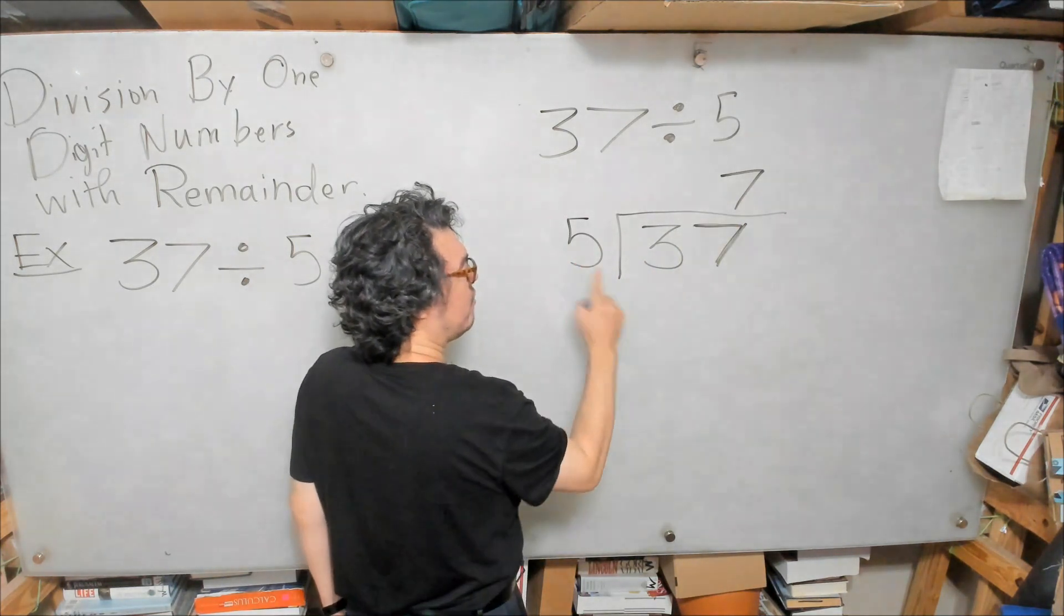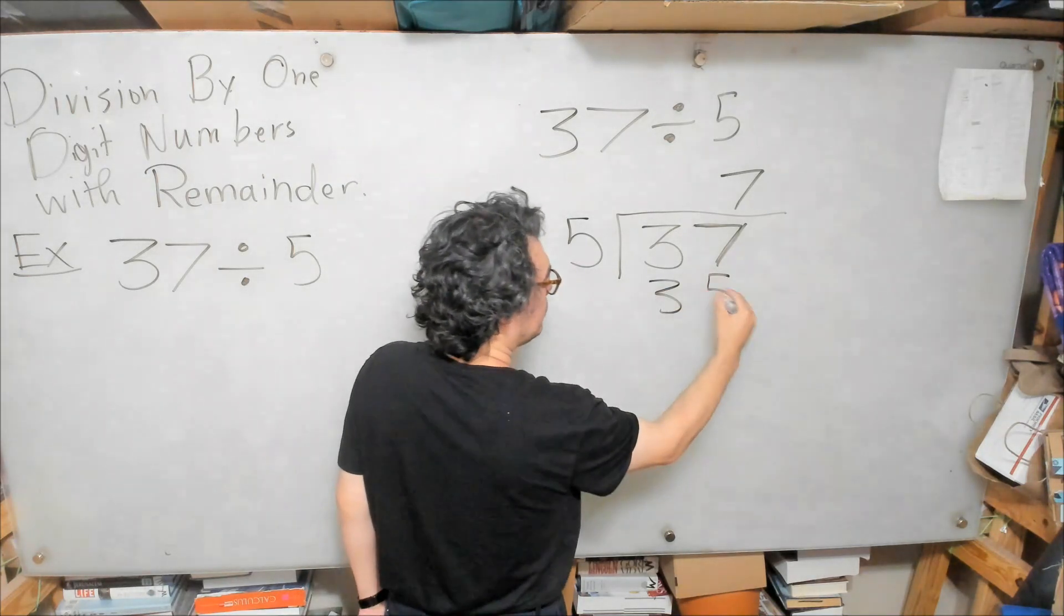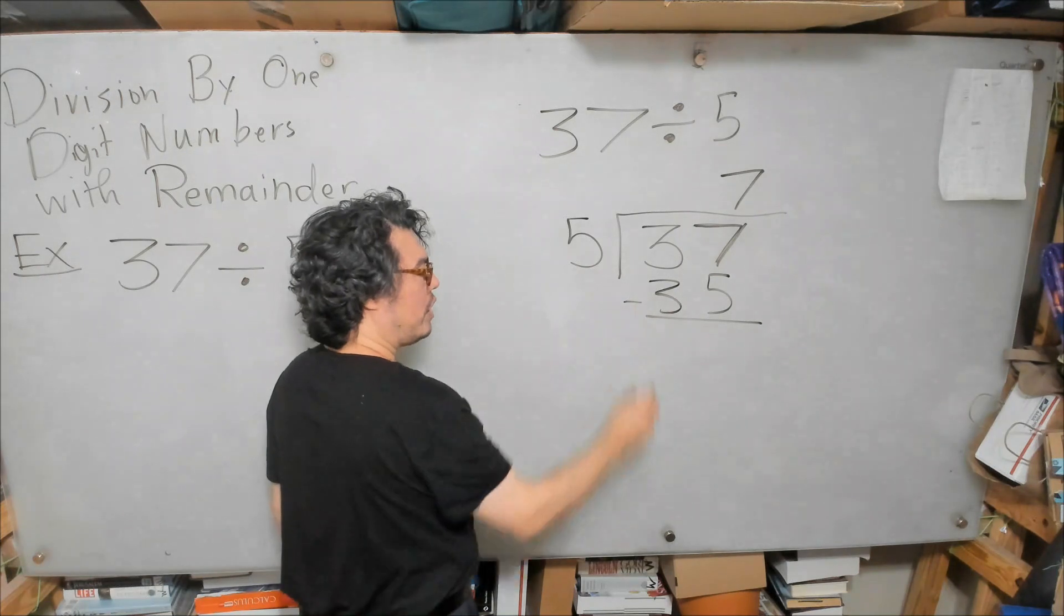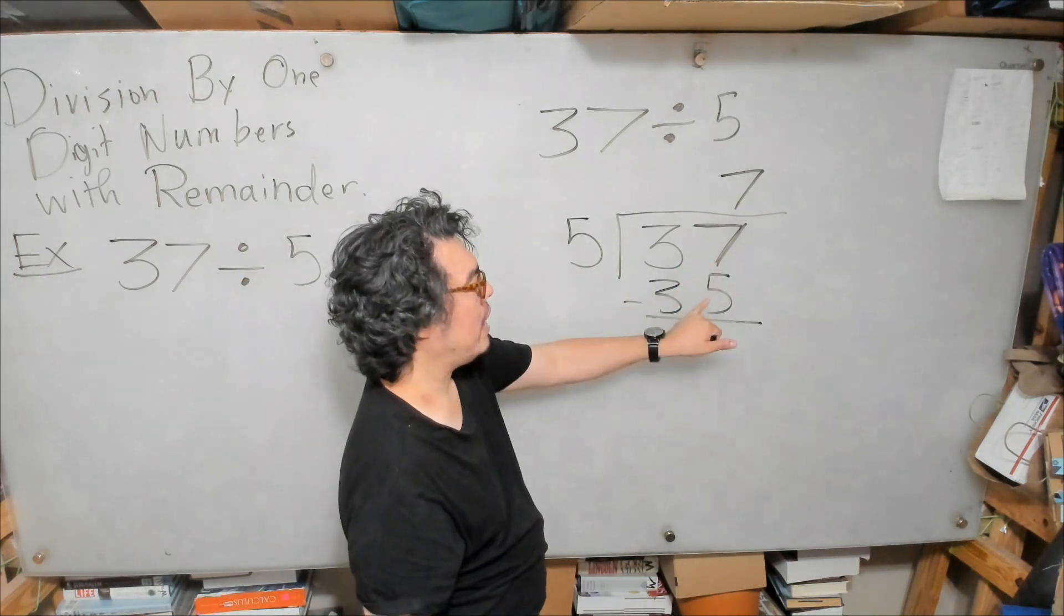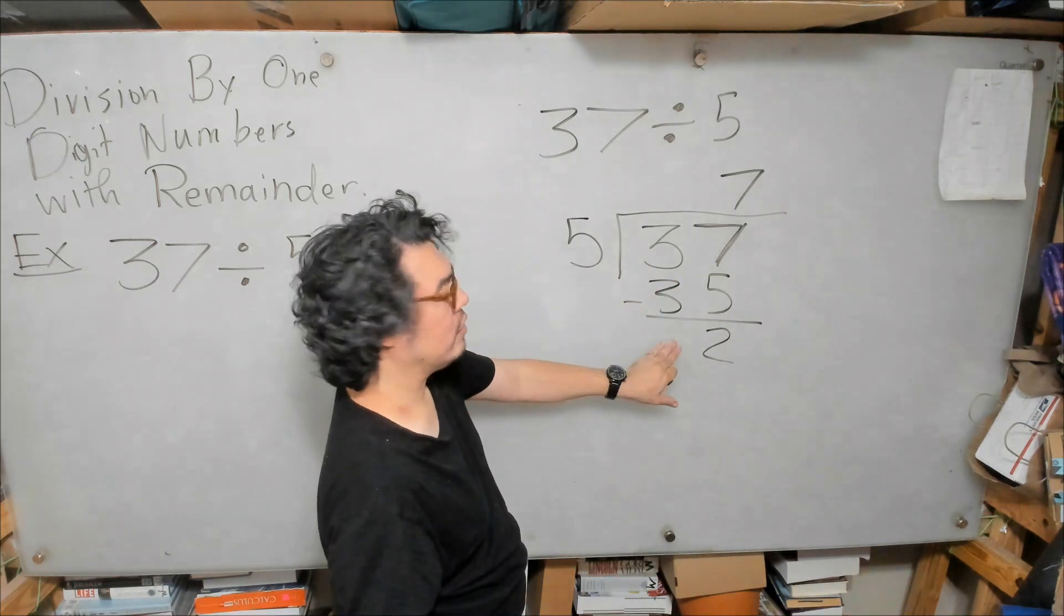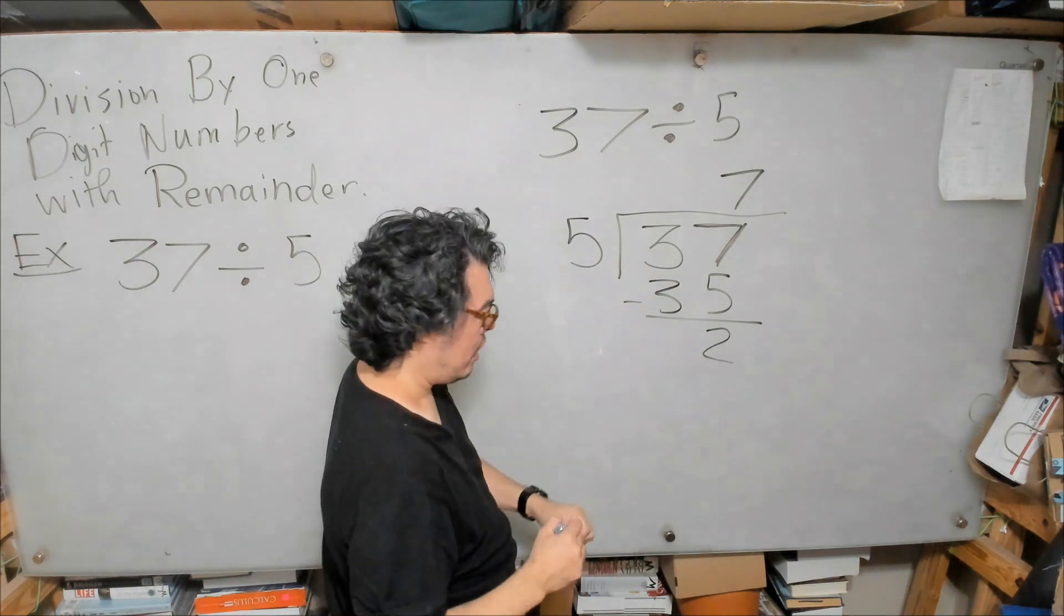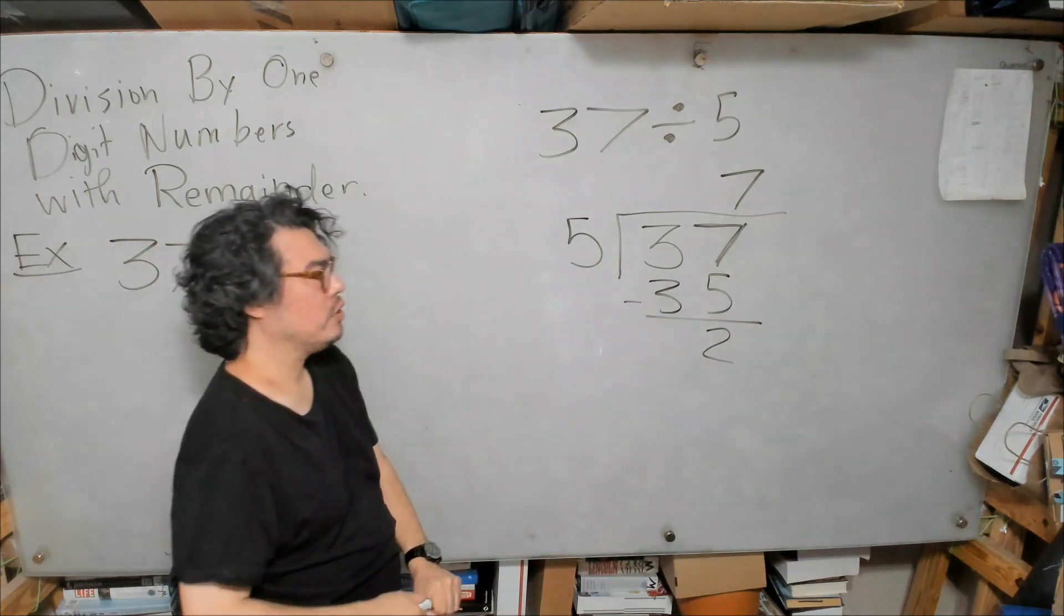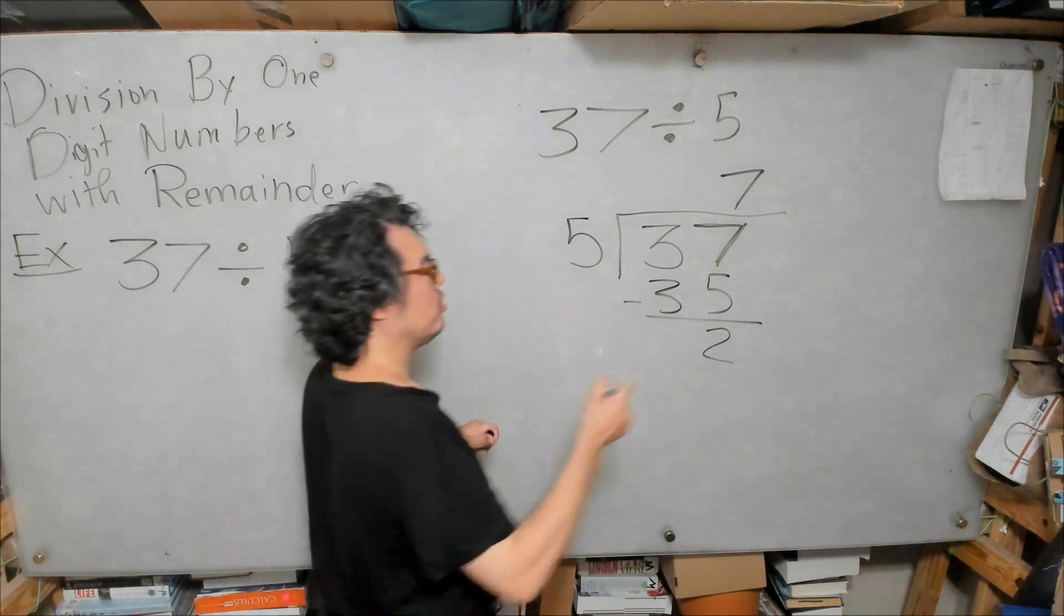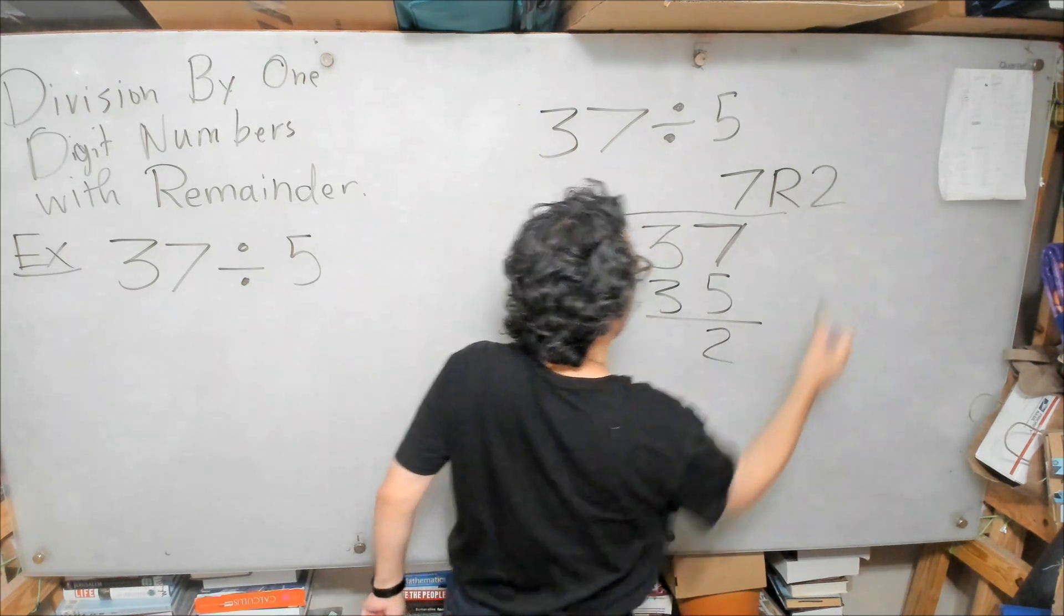7 times 5 is 35, like this. So now here we perform the subtraction. 7 minus 5 is 2, 3 minus 3 is 0. And whenever you reach this stage, this number will be your remainder. So 7, remainder 2.